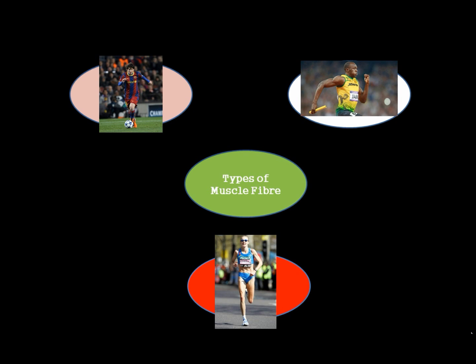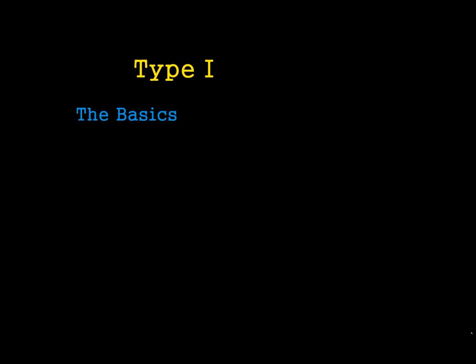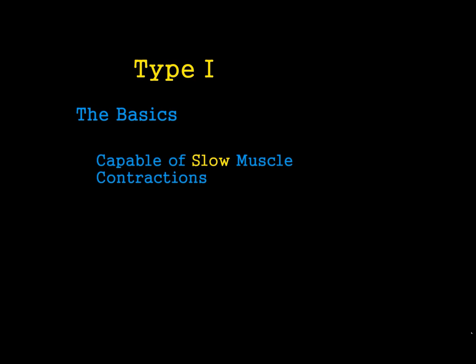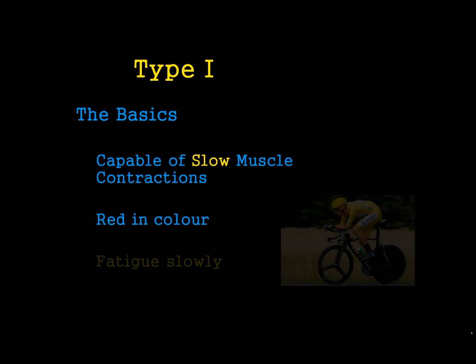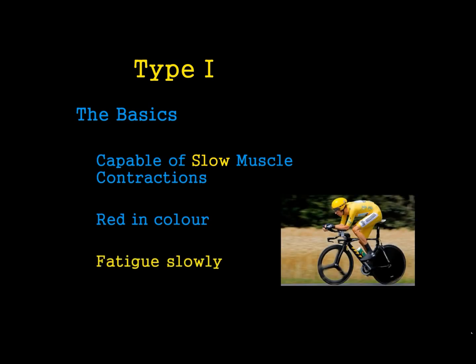We need to look at these in a little bit more detail. For a Type 1 muscle fibre, it's capable of slow muscle contractions. It's red in colour, and they tend to fatigue slowly. These are the muscle fibres that we use in long duration activities.